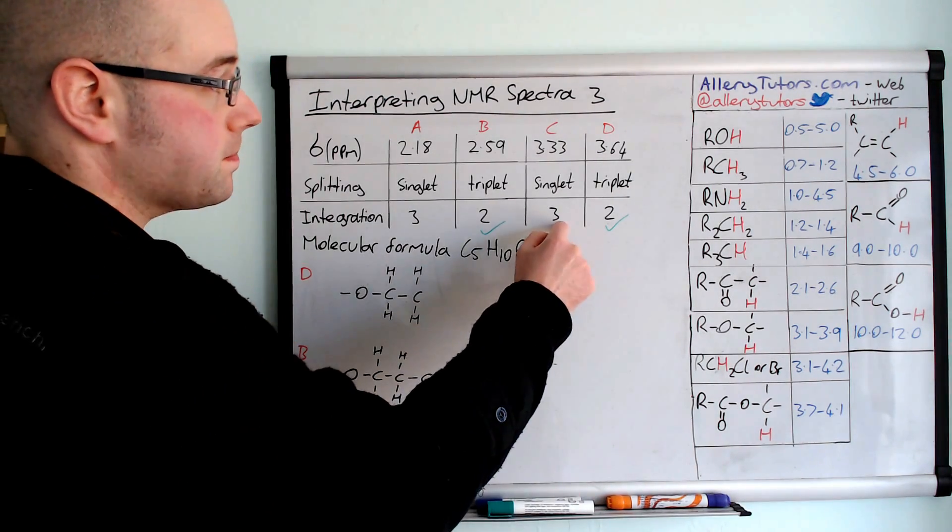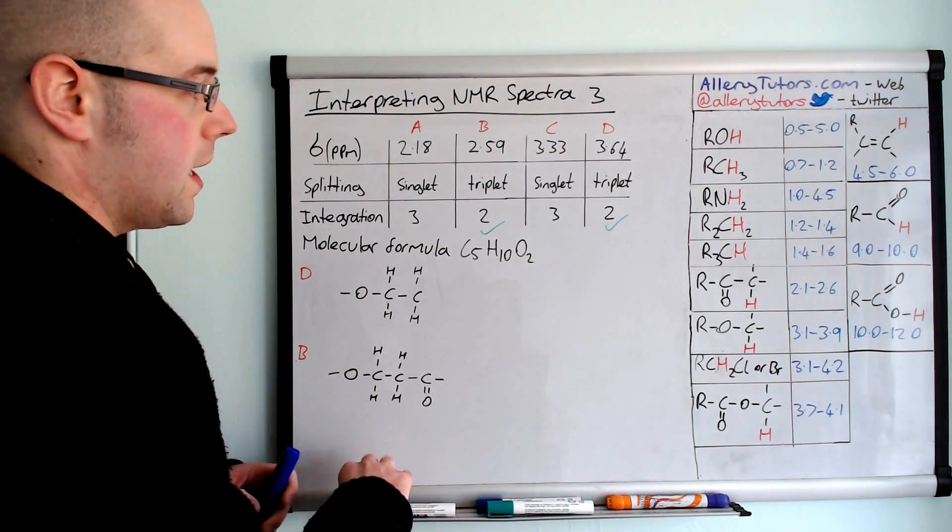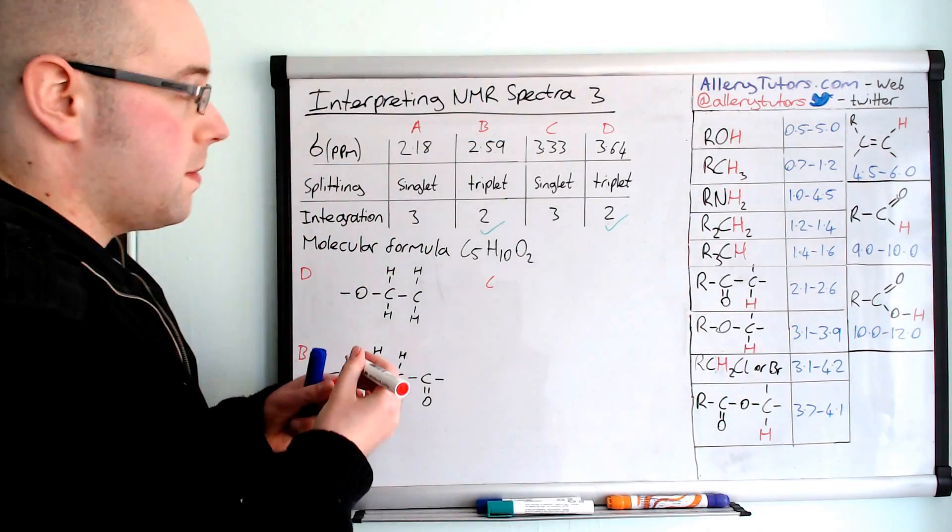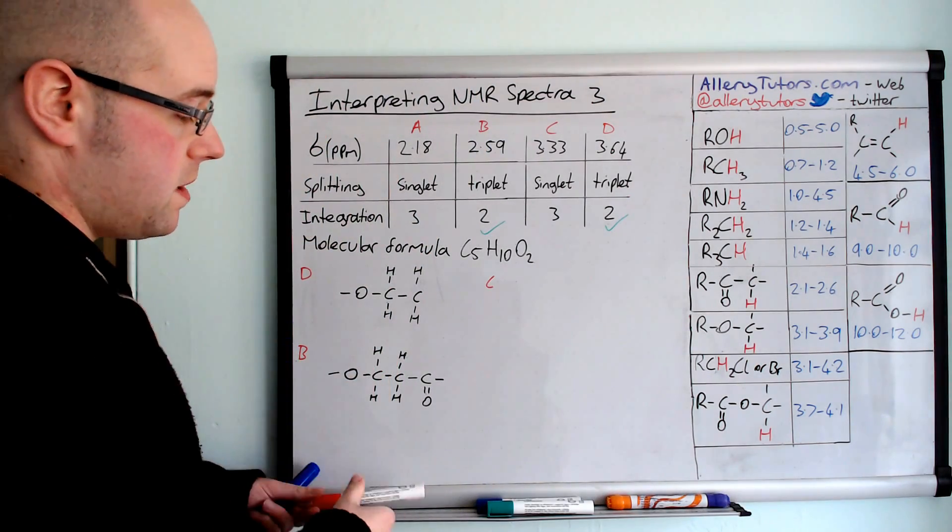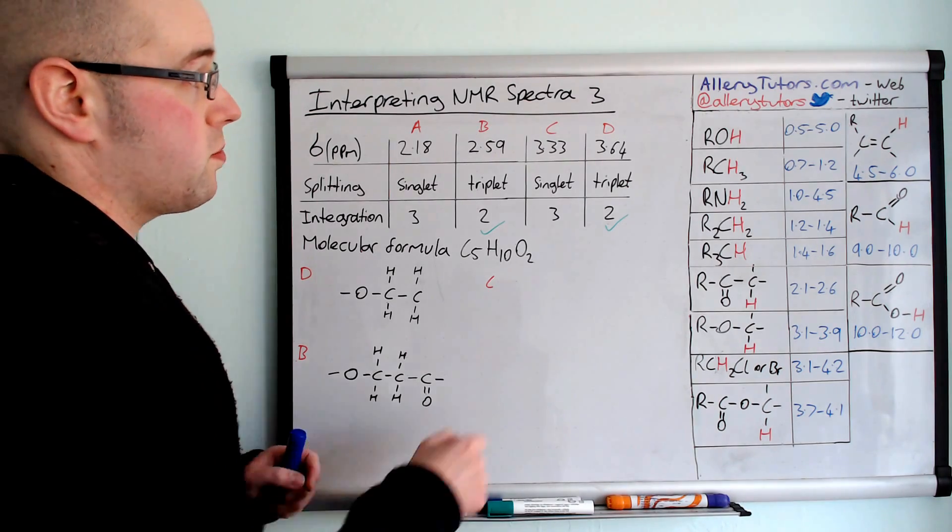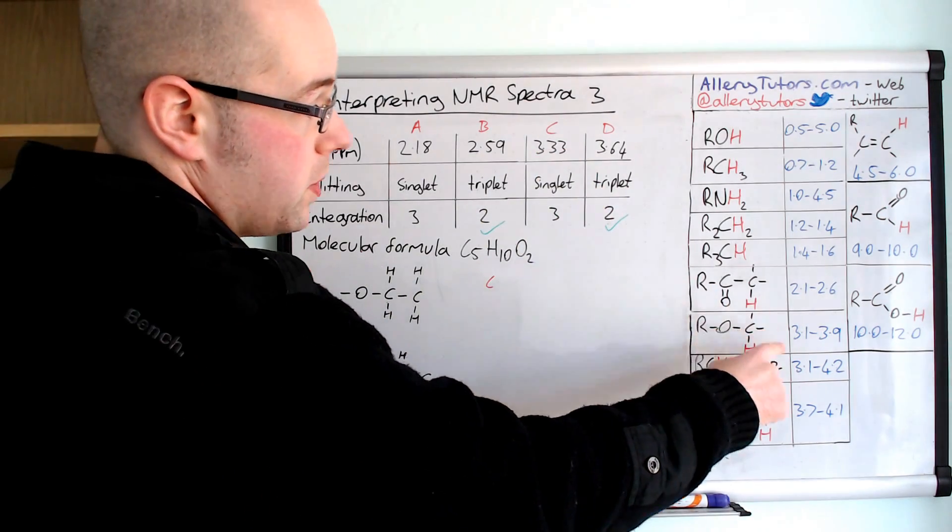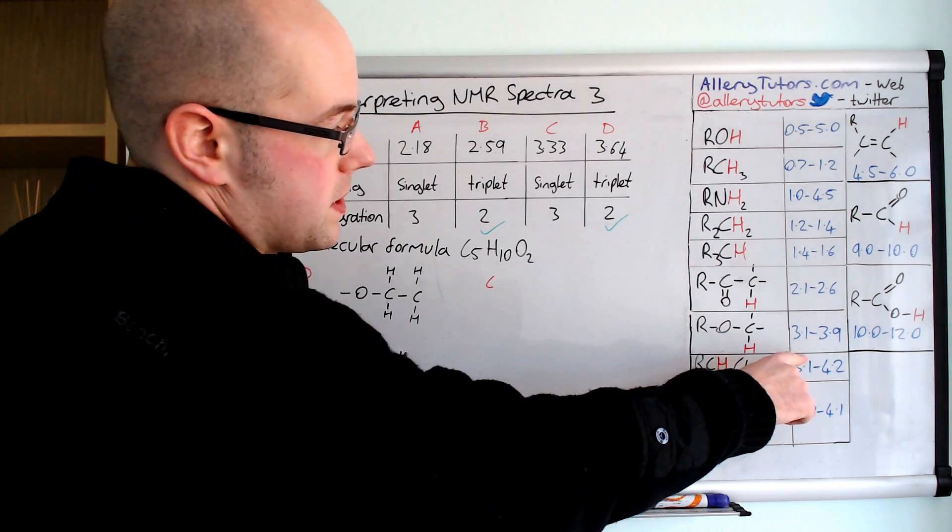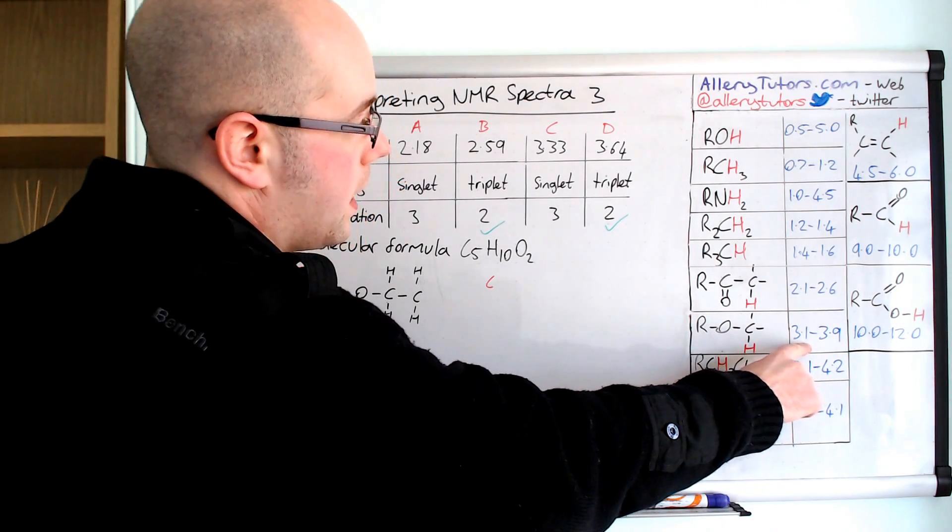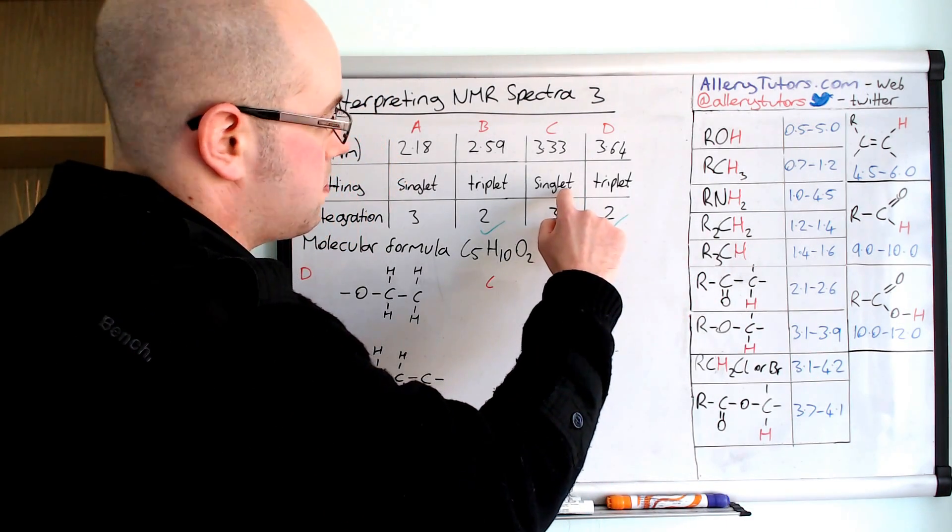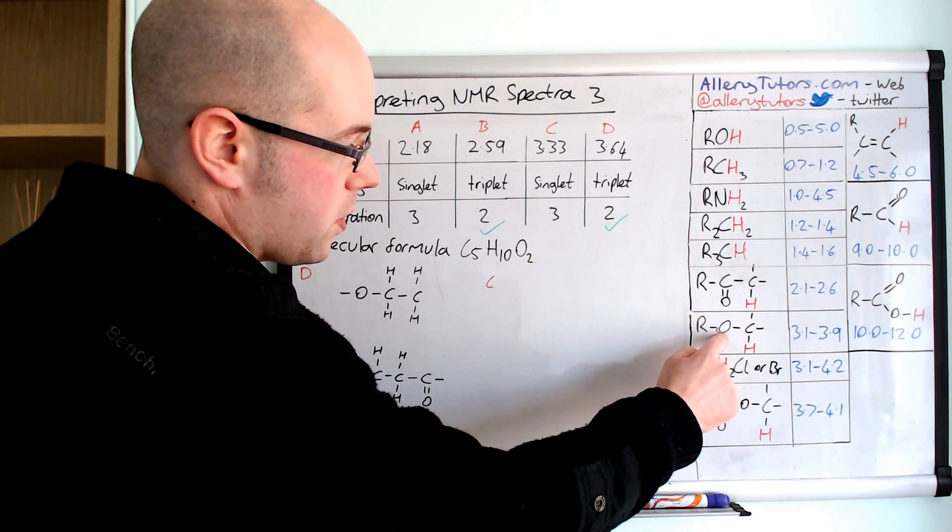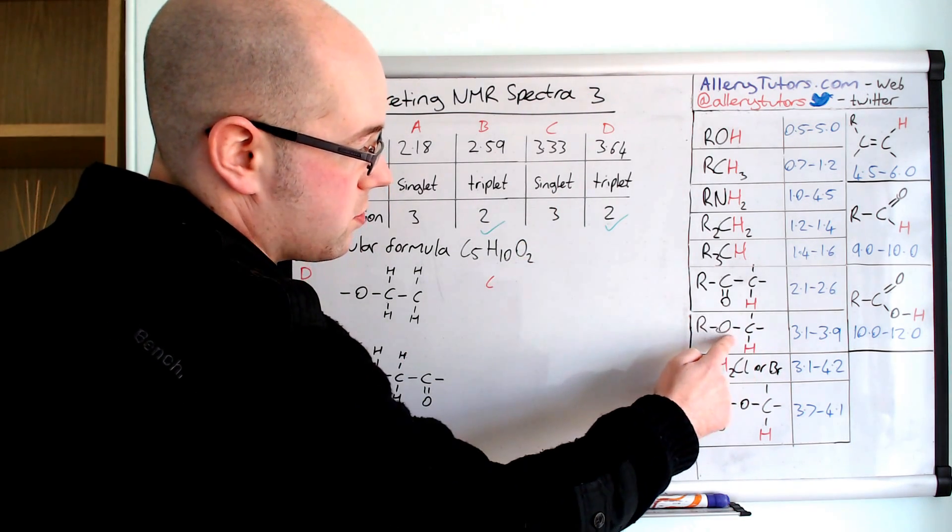We'll look at C now. The environment C, we've got a shift of 3.33. If we look down here and try and find 3.33, we can see that it would fit in this group here. What it's telling us is we have a splitting of singlet, but we have three hydrogens in this environment. So we've got an oxygen with three hydrogens next to it.